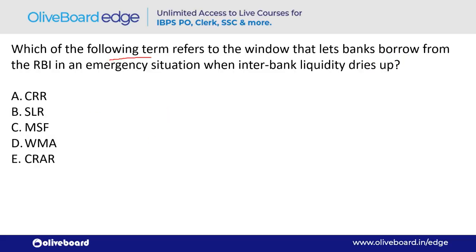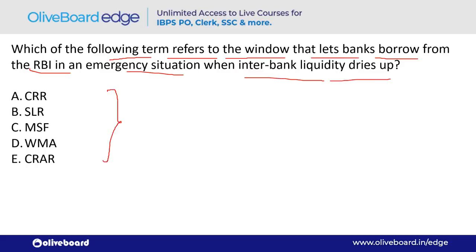Which term refers to the window that lets banks borrow from the RBI in an emergency situation when interbank liquidity dries up? The answer is MSF — Marginal Standing Facility.